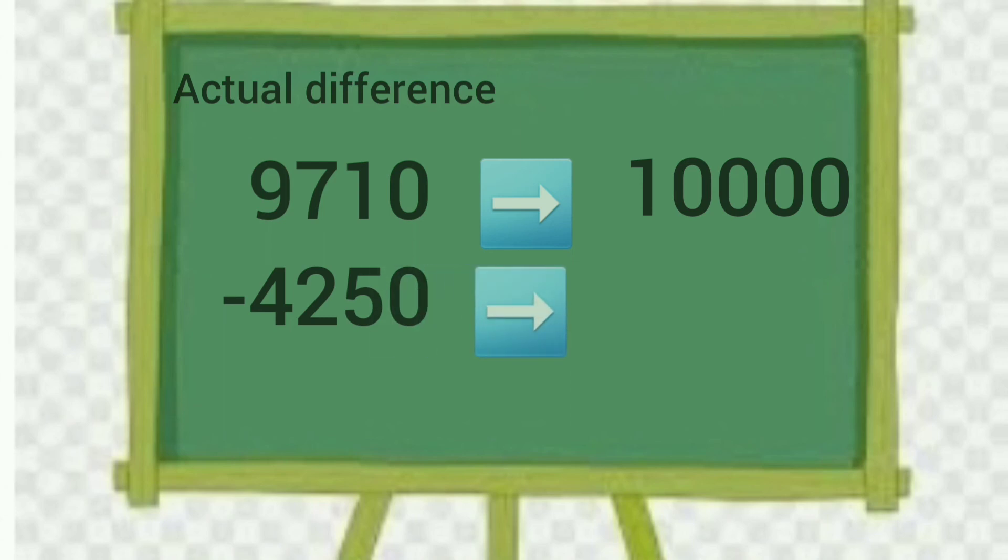9710 minus 4250. Here are four digits and the number is in thousands, so we will round up to 10,000. 9710 will be rounded up to 10,000 and 4250 will be rounded down to 4000.